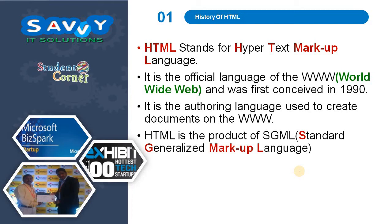HTML stands for Hypertext Markup Language. It is the official language of the WWW and was first conceived in 1990. It is the authoring language used to create documents on the web. HTML is a product of SGML, that is Standard Generalized Markup Language.